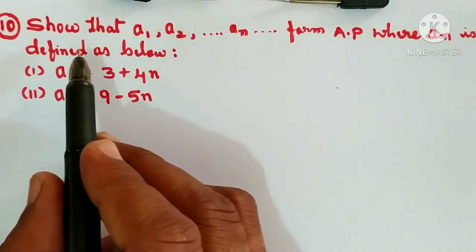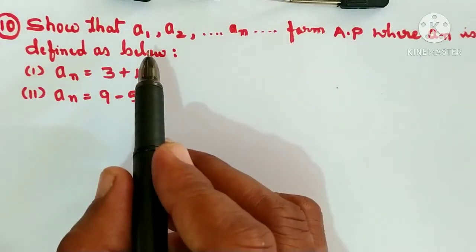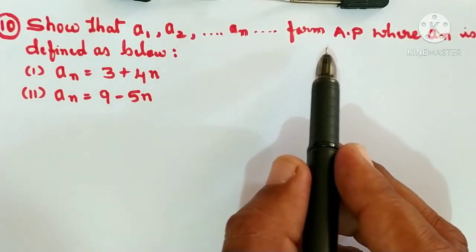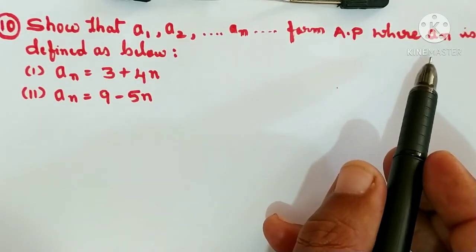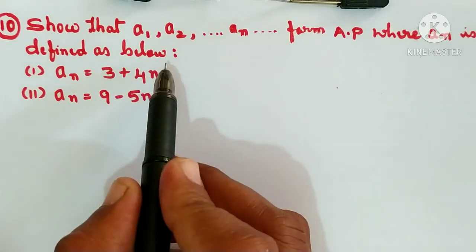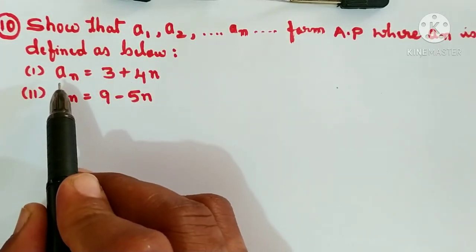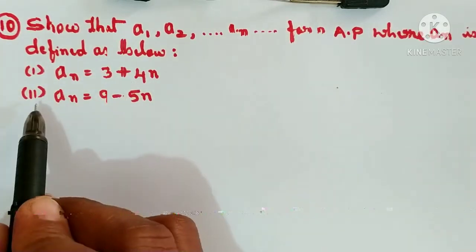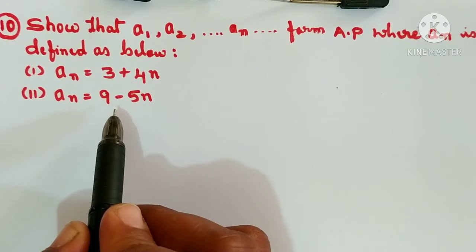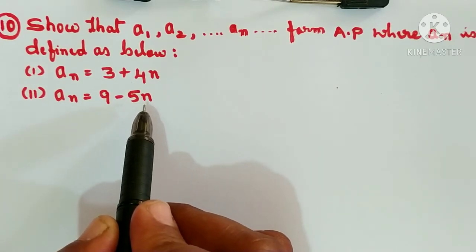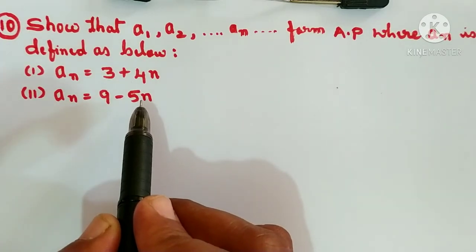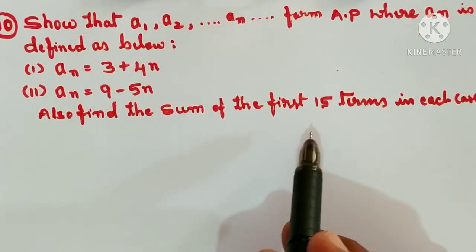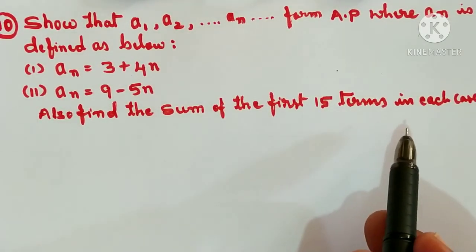Question number 10. Show that a1, a2, ..., an form an AP, where an is defined as below. First: an is equal to 3 plus 4n. Second: an is equal to 9 minus 5n. Also find the sum of the first 15 terms in each case.